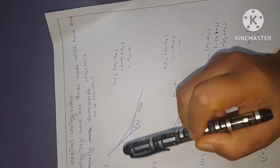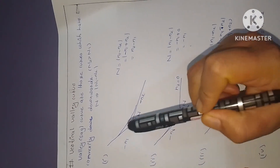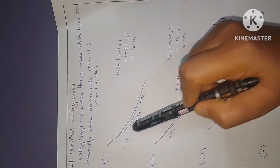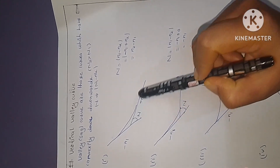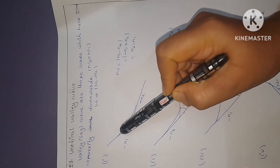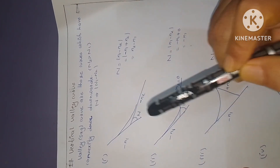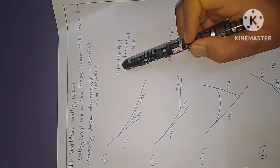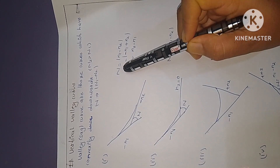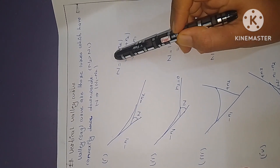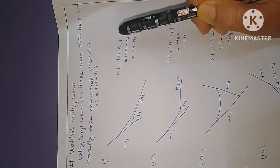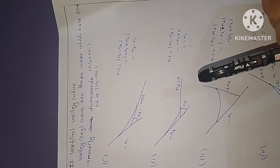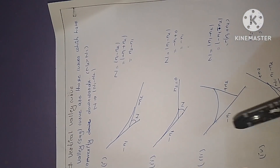In this case, there are four cases. In the first case, when a downward grade meets a downward grade, this means a descending order curve. Here N1 is negative and the deviation angle N2 minus N1 is computed accordingly.